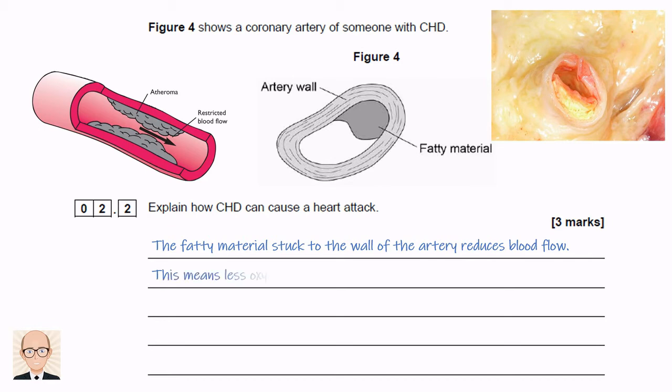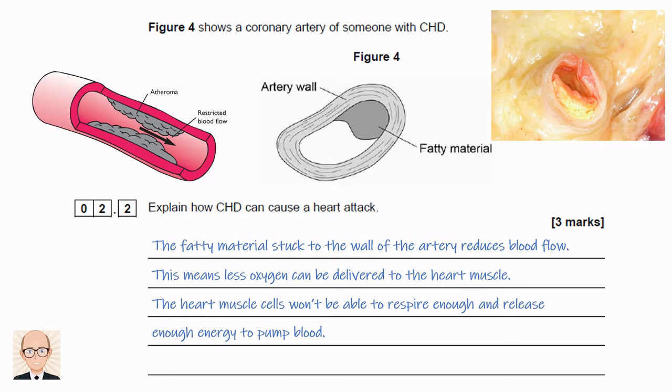Then we need to link the reduced blood flow to a lower level of oxygen being delivered to the heart muscle. Finally, we need to write about the heart muscle cells themselves not getting the oxygen they need to respire, so they won't be able to release the energy they need in order to pump the blood.